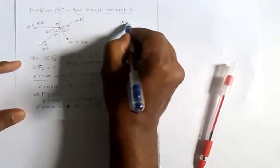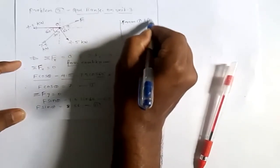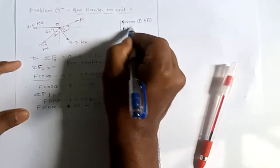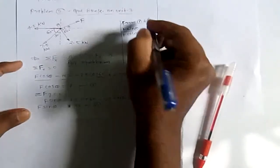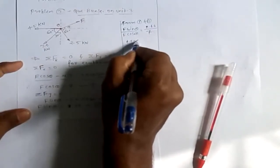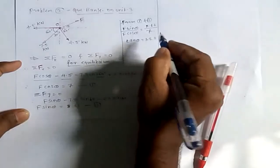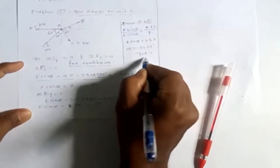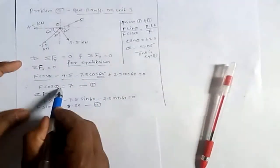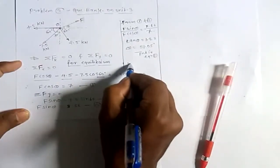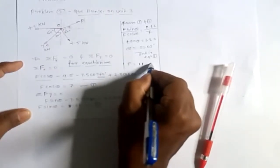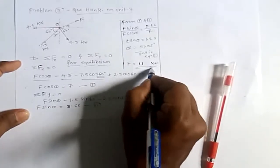Dividing the second equation by the first: tan theta equals 8.66 divided by 7 equals 1.23, giving theta equals 51.05 degrees. Substituting back into F cos theta equals 7 gives F approximately equal to 11 kN.